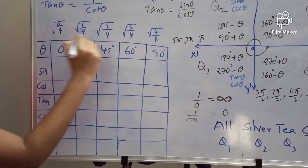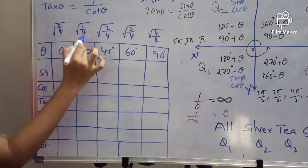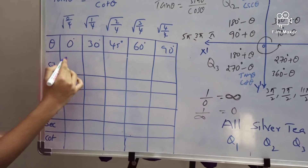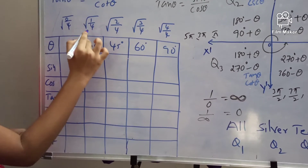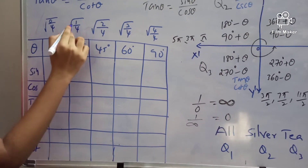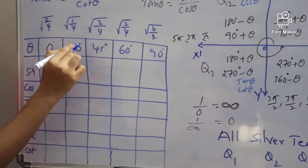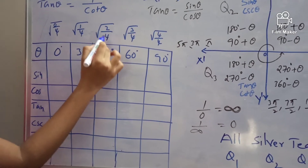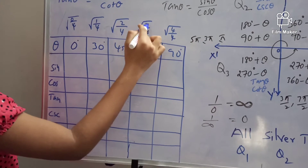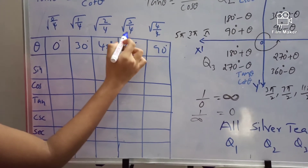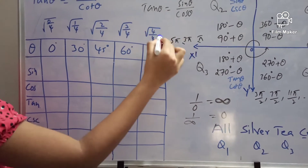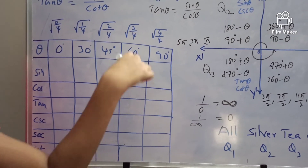For all these ratios, we use the fractions 0/4, 1/4, 2/4, 3/4, 4/4 under a square root. 0/4 = 0. Root(1/4) = 1/2, since root(a/b) = root(a)/root(b) and root(4) = 2. Root(2/4) = 1/root(2). Root(3/4) = root(3)/2. Root(4/4): 4 cancels to give root(1) = 1.